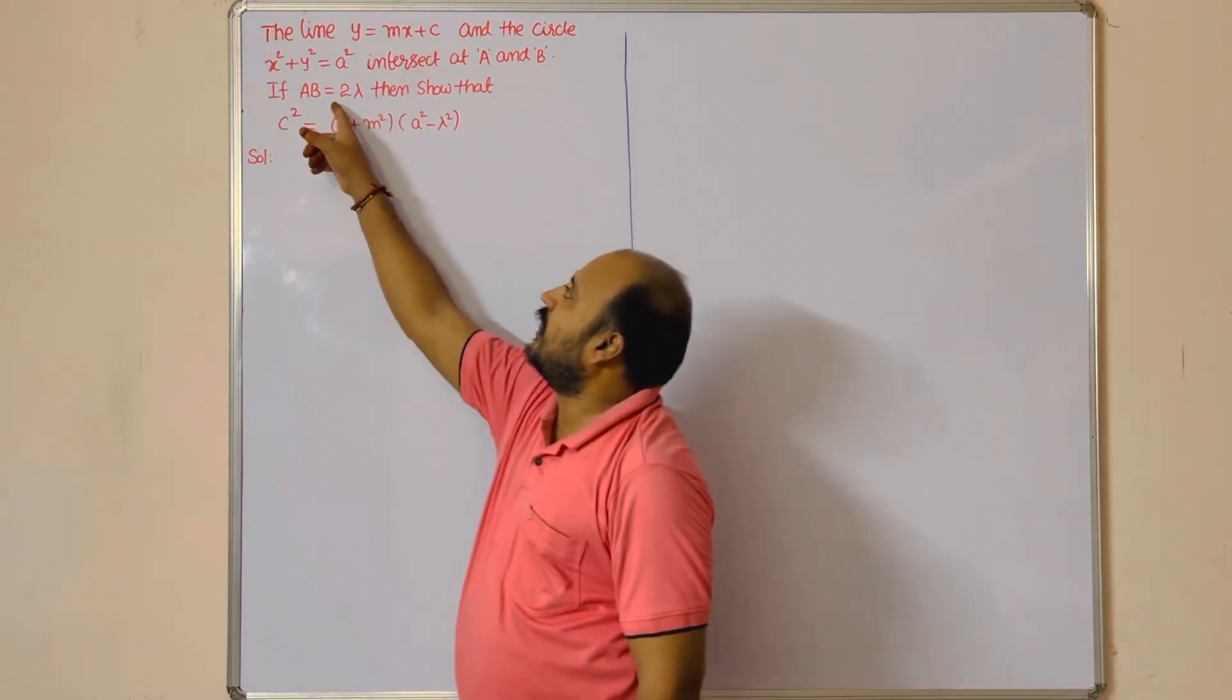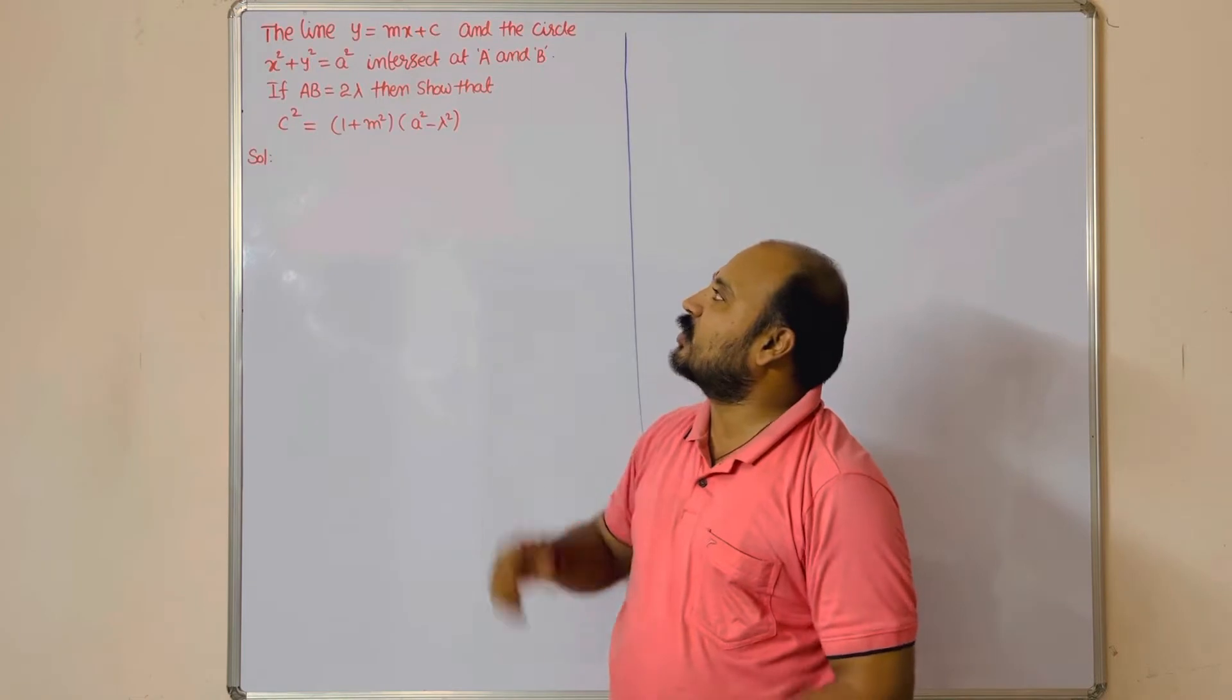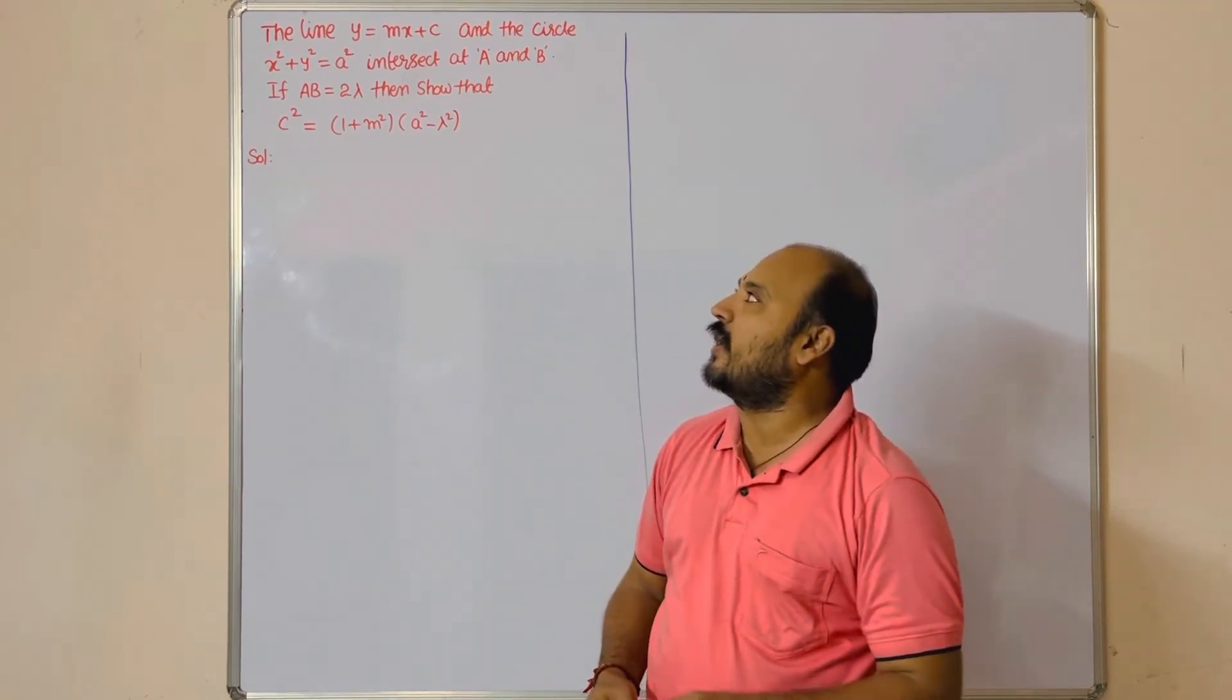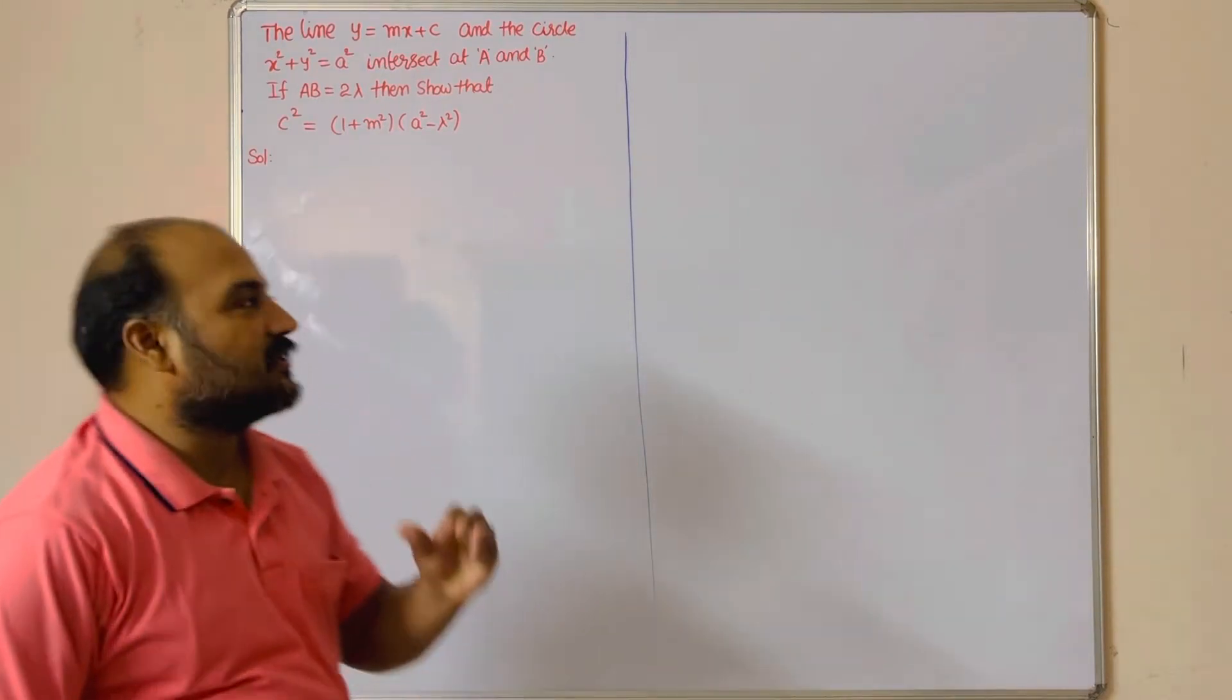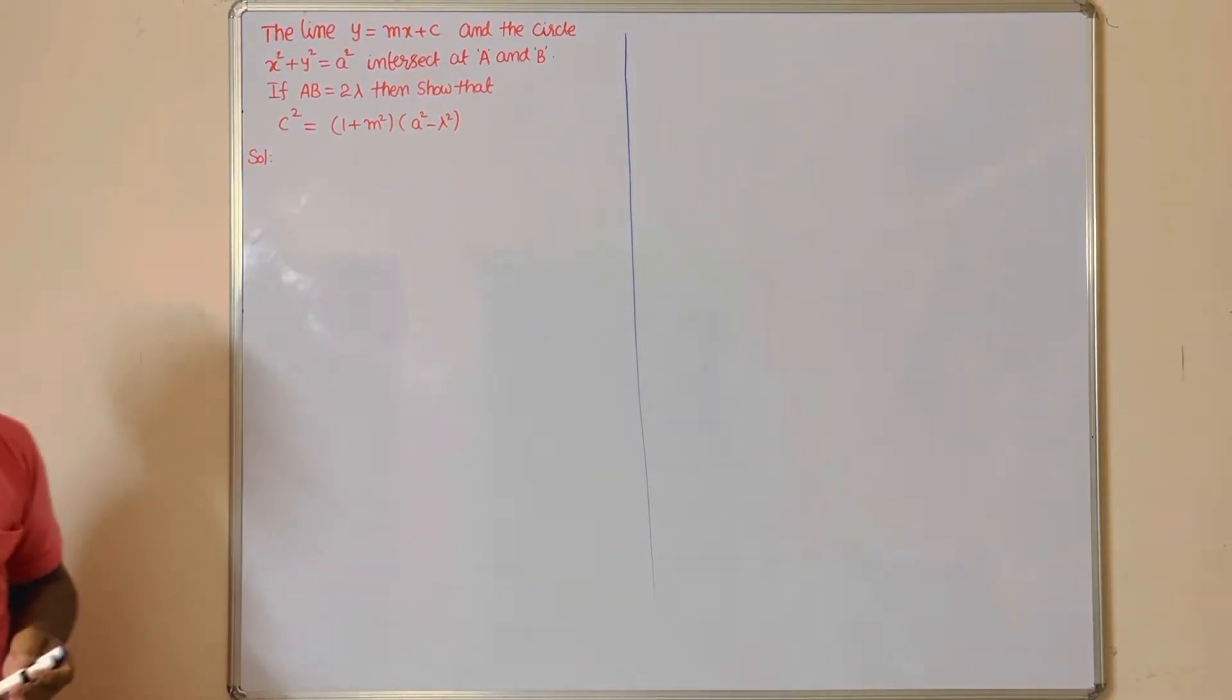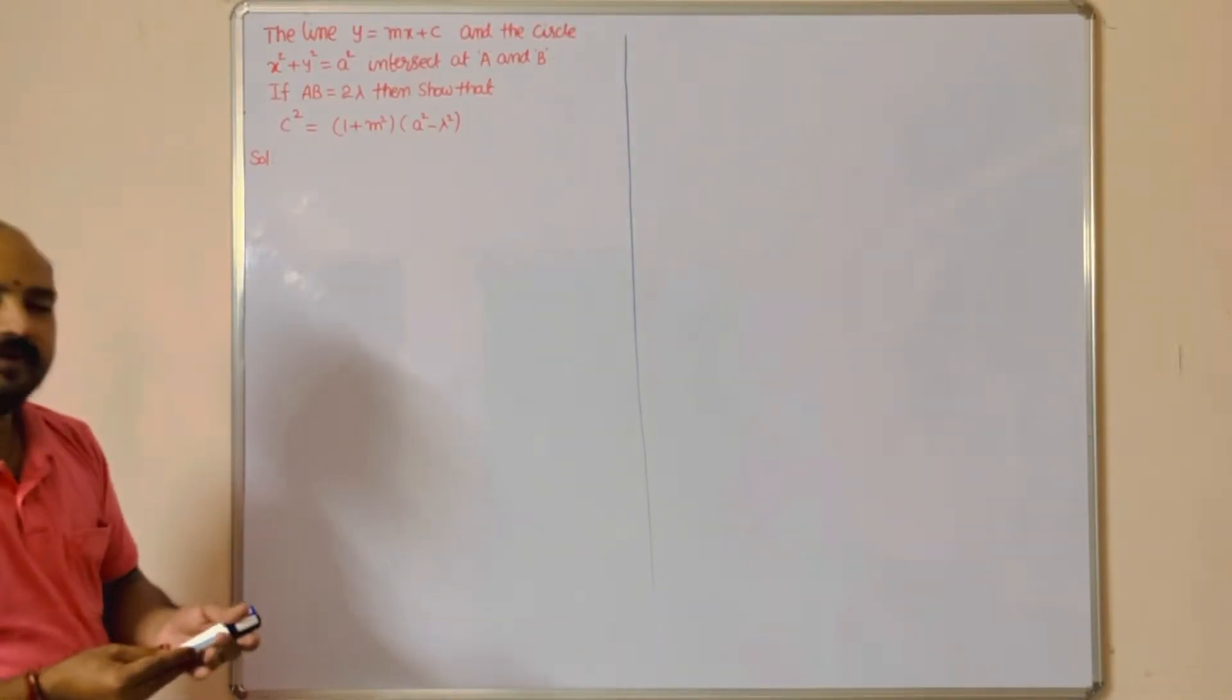If AB = 2λ, then show that c² = (1 + m²)(a² - λ²). So these are the questions. In the previous question, we discussed based on that approach; we can do this, students.